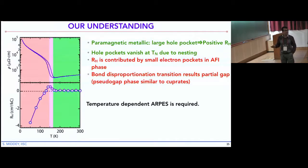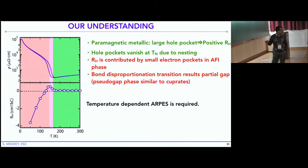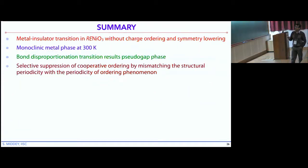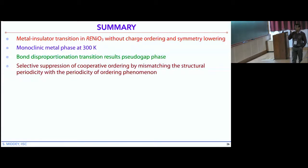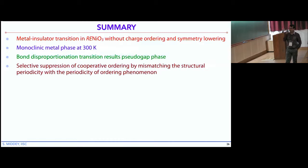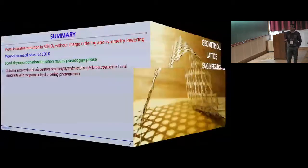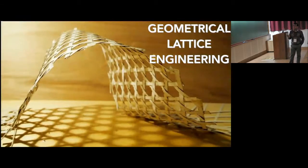To conclude the first part: for rare earth nickelates, you can get metal-insulator transitions without charge ordering and without symmetry lowering. The bond disproportionation phase gives a pseudo-gap phase, and selective suppression of cooperative ordering is possible via heterostructure engineering. The second part concerns geometrical lattice engineering — whether you can generate artificial lattice symmetries like a Kagome lattice using heterostructures.